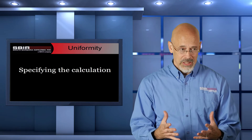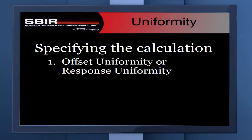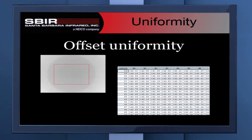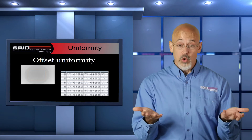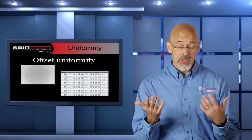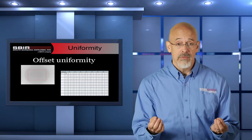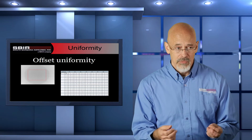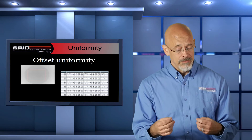The first ambiguity is whether or not we're talking about the offset uniformity or the response uniformity. For offset uniformity, we take a single image of a uniform source and look at the variance in how all of those sensors respond within that single image. We could correct that by applying different offsets to every pixel so they all come out the same, but the initial reading is where we look at that variation in the offsets — that's our offset uniformity.